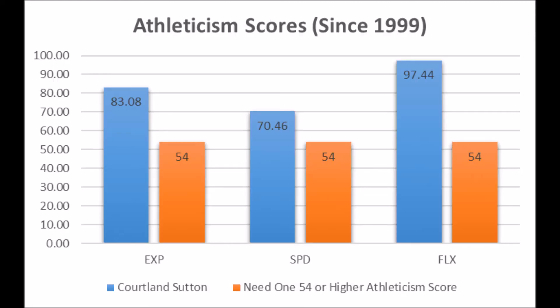His athleticism data from the combine: an 83.08 explosive or body strength score, a 70.46 speed score, and a 97.44 flexibility score. Based on my data since the 1999 NFL draft class, the vast majority of wide receivers need at least a 54 or higher in any athleticism trait — explosion, speed, or flexibility. Only Chad Johnson and Jarvis Landry have become multiple all-pro or pro bowl receivers without hitting those thresholds. Cortland Sutton is 54 or higher in every single category, and his flexibility score is in the 90th-plus percentile.